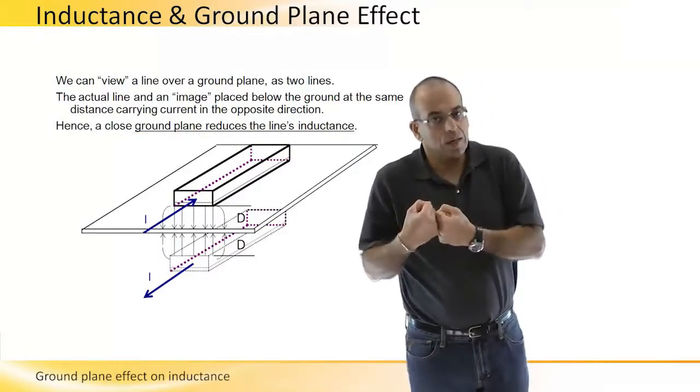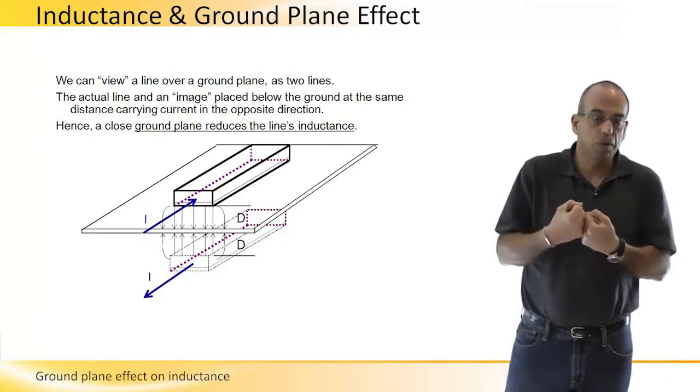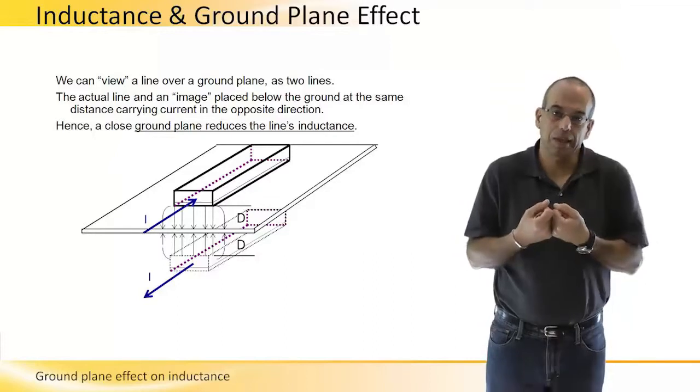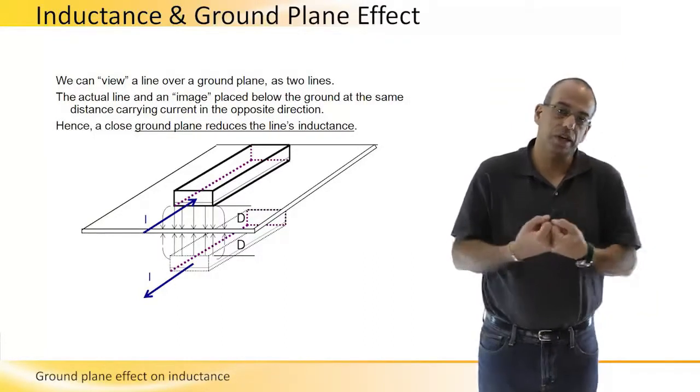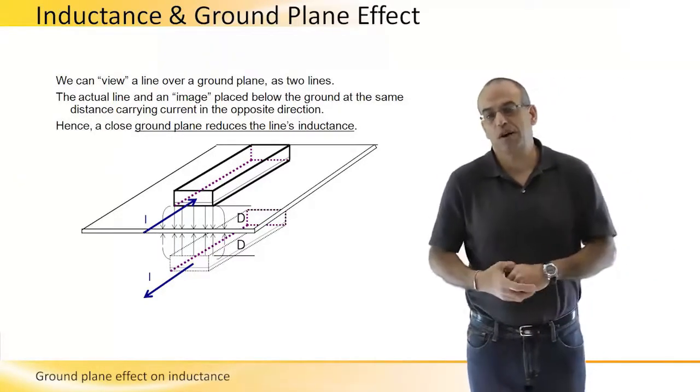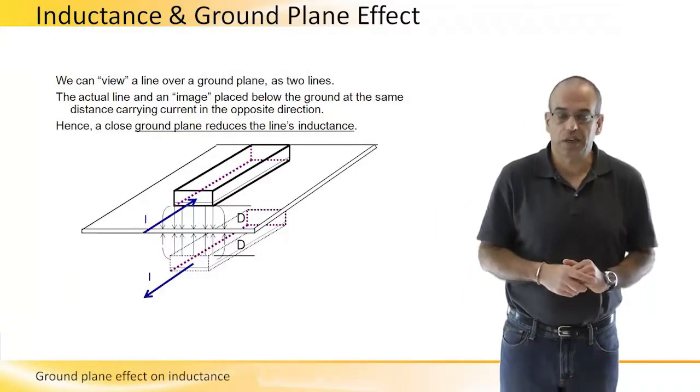Okay, we can go back to the coaxial segment example we discussed before and understand why we got a little lower inductance per unit length for a coax line than we get for a strip that is not close to ground. This should also be taken into account.